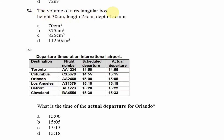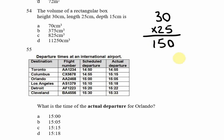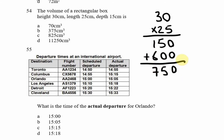Moving to question 54 — the volume of a rectangular box with height 30 cm, length 25 cm, and depth 15 cm. We find the volume by multiplying all three dimensions. Since City and Guilds does not allow a calculator, we do this manually. First, 30 times 25: five times zero is zero, five times three is fifteen, then two times zero is zero, two times three is six — giving us 750.